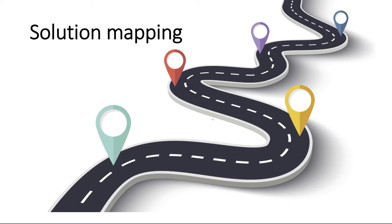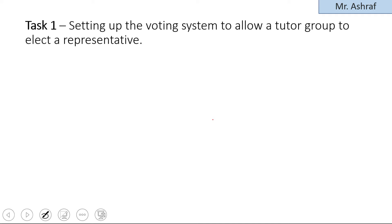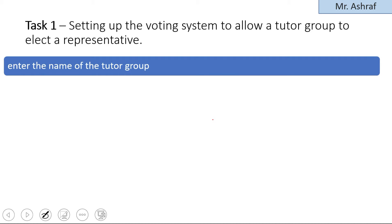Welcome back everyone. This is Computer Science 0478, the pre-release material pseudocode solution of May/June 2021 Paper 2, Variant 1. In this session I'm going to introduce the solution itself — the main steps and main points you need to go through to complete Task 1, Task 2, and Task 3.